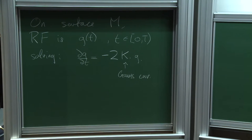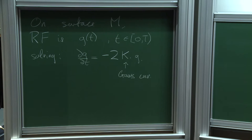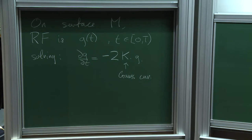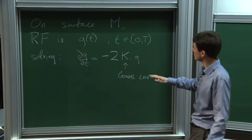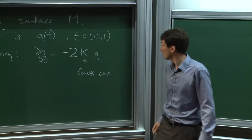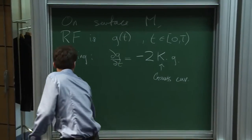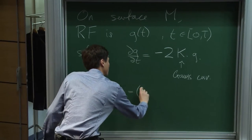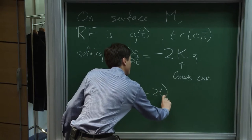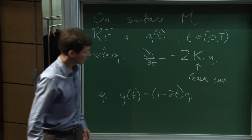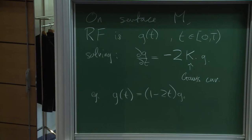An example: if M is a sphere and you start the Ricci flow with a round metric, that has constant Gauss curvature, so it would just be shrinking, and it would shrink to nothing in finite time — specifically in time one-half. Even though it's a somewhat banal example, it will be relevant in a moment.